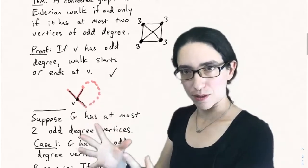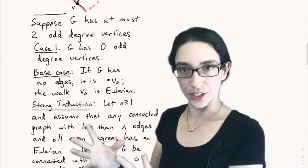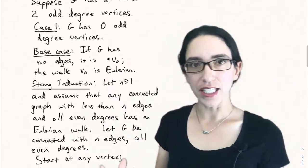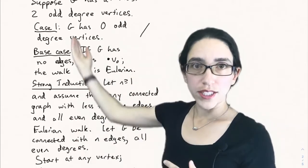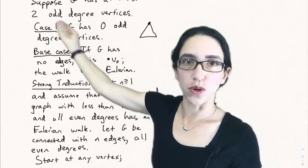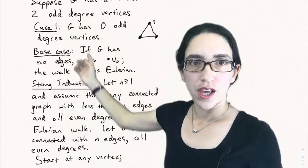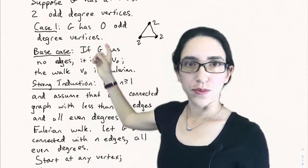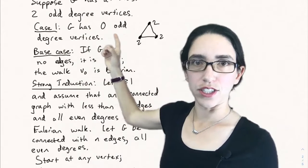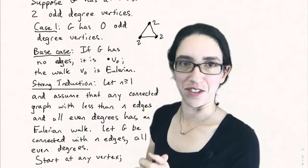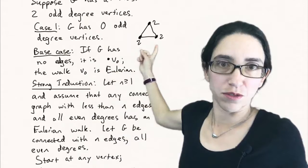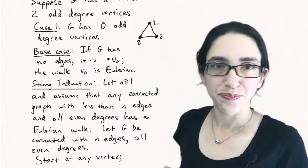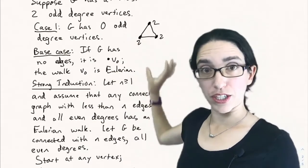But now the question is, if we have at most two vertices of odd degree, is there guaranteed to be an Eulerian cycle or an Eulerian walk? So let's suppose G has at most two odd degree vertices and it's connected. And let's do it in cases. First, say G has zero odd degree vertices. So say there's all even degree vertices, like the triangle, for instance, that has all even degree.